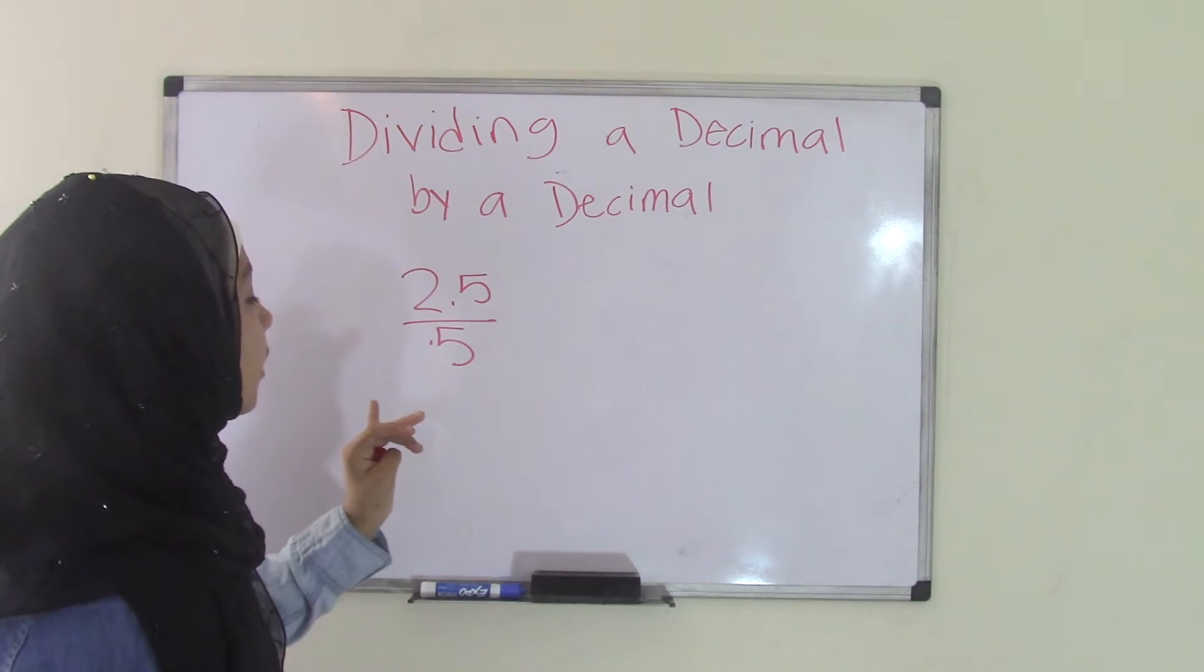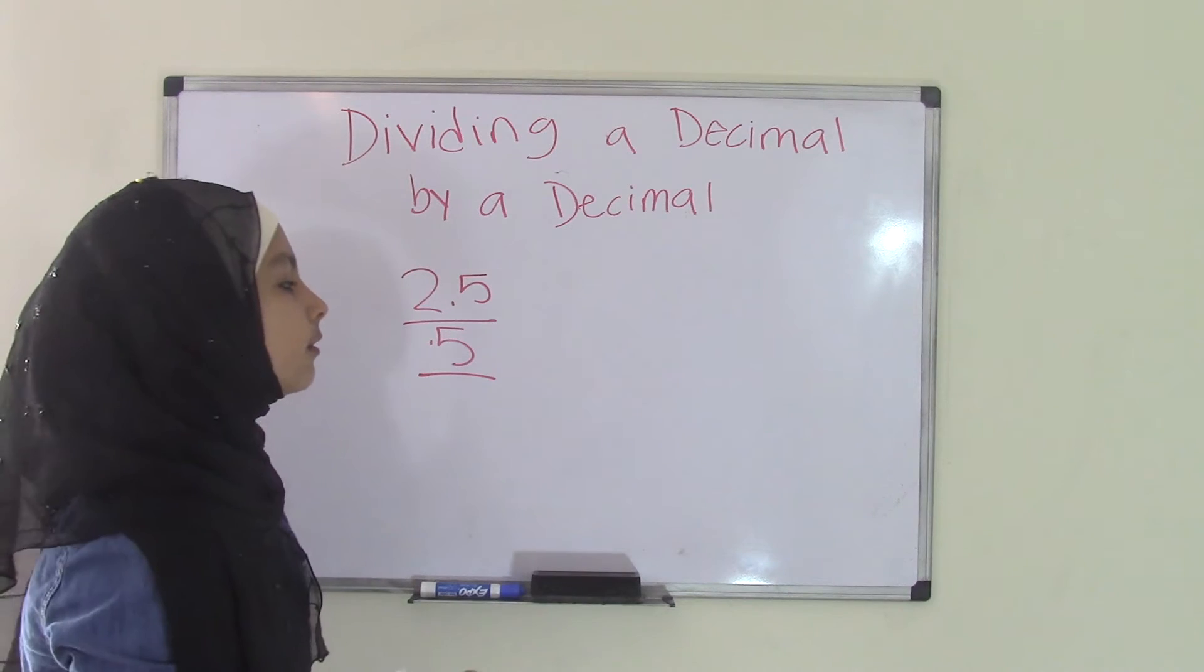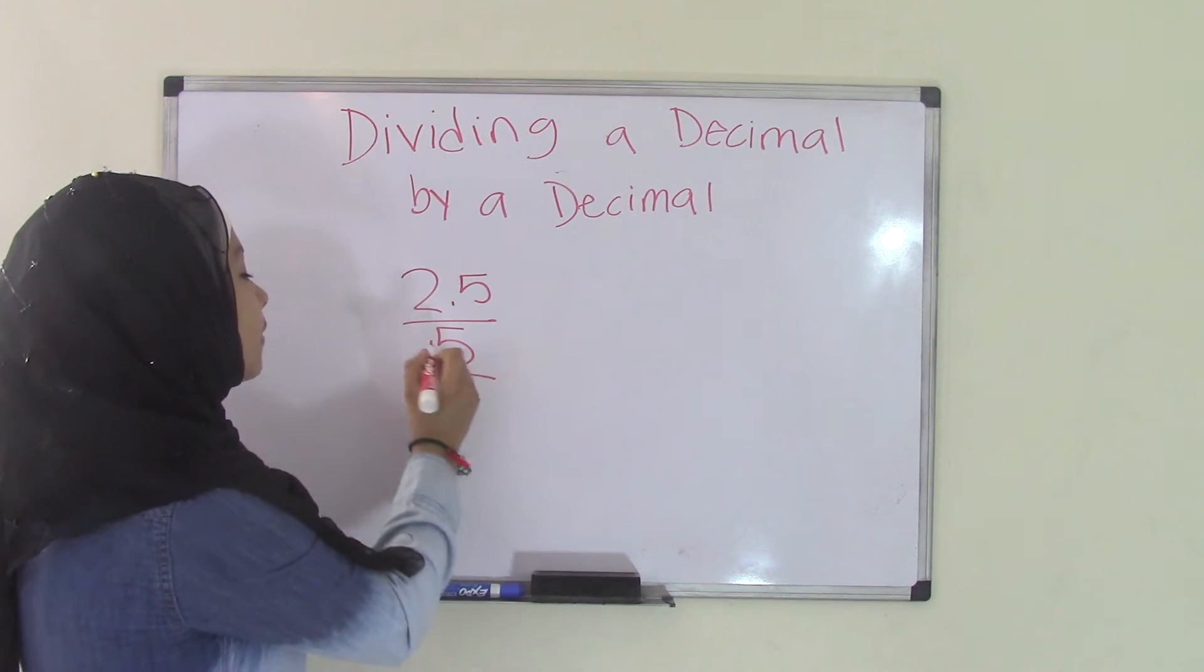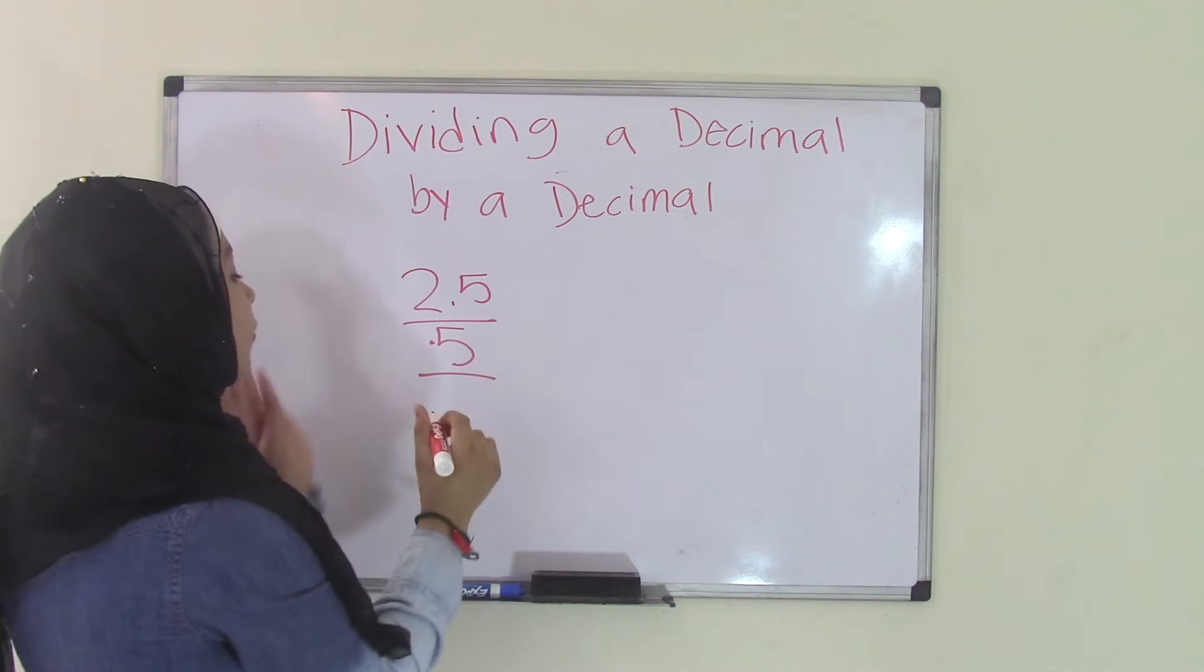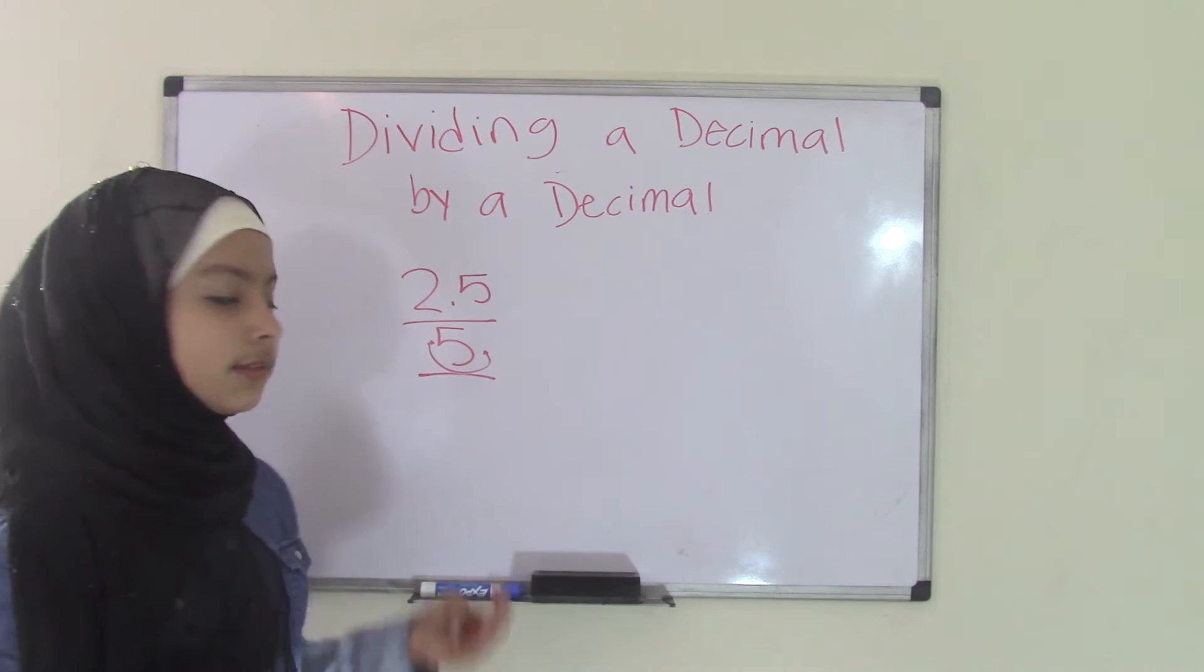So our goal here is to make the divisor, which is 0.5, a whole number. How are we going to do that? By moving the decimal point. Now if we move the decimal point one place from left to right, it will become a 5, right? So that's a whole number.